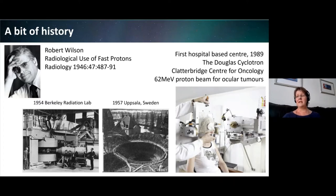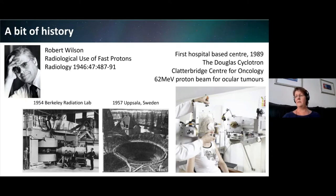The first hospital centre was based at Clatterbridge on the Wirral. The Douglas Cyclotron was originally sponsored by the Medical Research Council for neutron therapy trials, but in 1989 funding led to the introduction of treatment for tumours in the eye. The 62 MeV proton beam has a maximum range of 31 millimetres in water, perfectly suited for treating any position within the eye. The Clatterbridge Centre is still operating today and has treated over two and a half thousand patients.